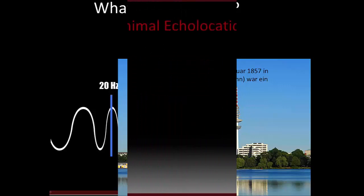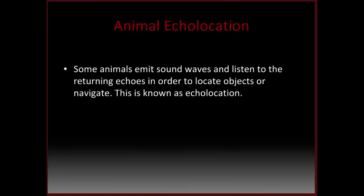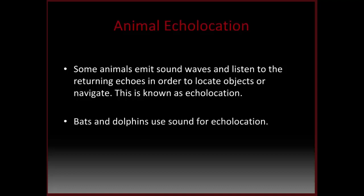Let's have a look at a few examples from the animal kingdom. There are some animals that actually emit sound waves and listen to the returning echoes, and are able to use this to locate prey or just to navigate — we call this echolocation. For instance, bats and dolphins both use echolocation. In the next slide I'm going to show an animation of a dolphin on its way to hunt some small fish, and how it uses sound waves to locate these fish.